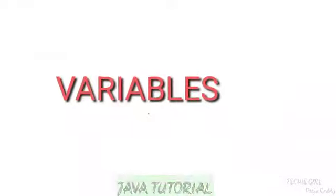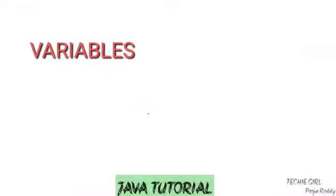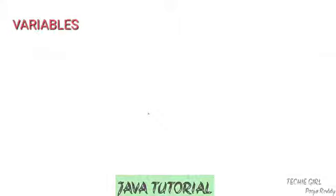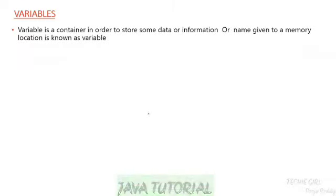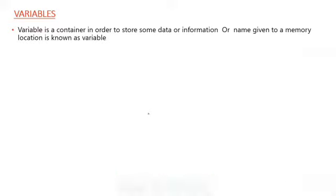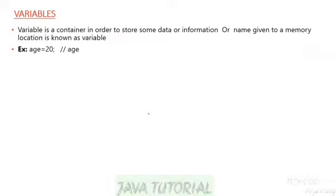Hi folks, greetings for the day. Today we are going to discuss about variables. Variables are typically used to store information which your Java program needs to do its job. A Java variable is a piece of memory that can contain a data value, and a variable thus has a data type as well. Let's take a simple example: age is storing some value called 20.